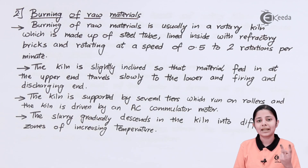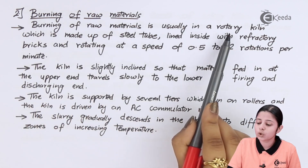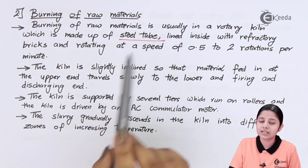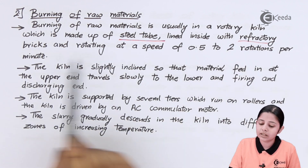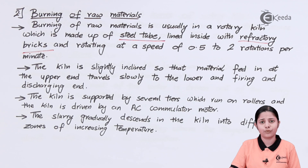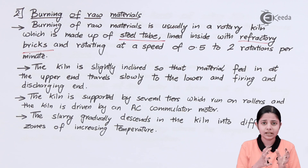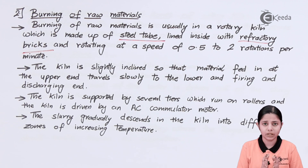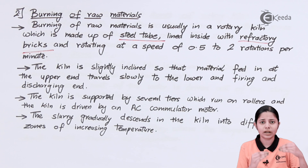The second step is burning of raw materials. The raw materials — limestone and wet clay — are burned in a rotary kiln, which is made up of a steel tube lined inside with refractory bricks. Refractory bricks are made of refractory materials, which are materials that do not themselves get affected by heat, ensuring the heat inside does not go outside and the cool temperatures outside do not come inside.